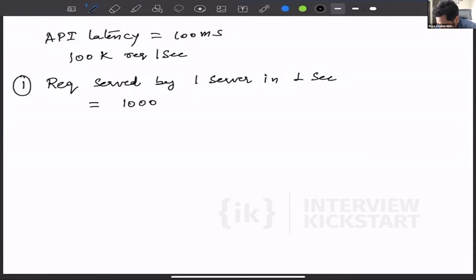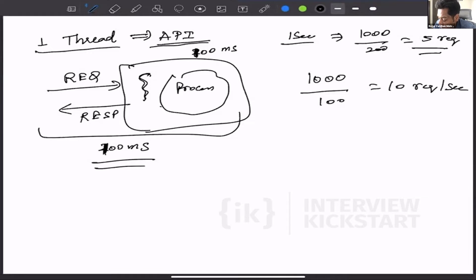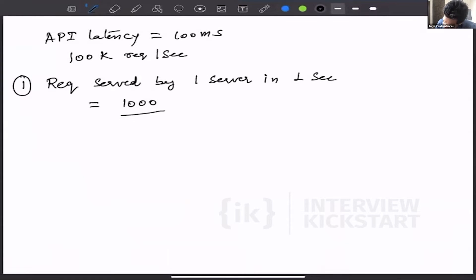If it is only one thread, we know that one second is 1000 milliseconds. One thread is serving one API. The request comes to the thread, it accepts the request, does some background processing, and then serves the response. This part takes 100 milliseconds. That means this one thread is able to serve 10 requests per second.